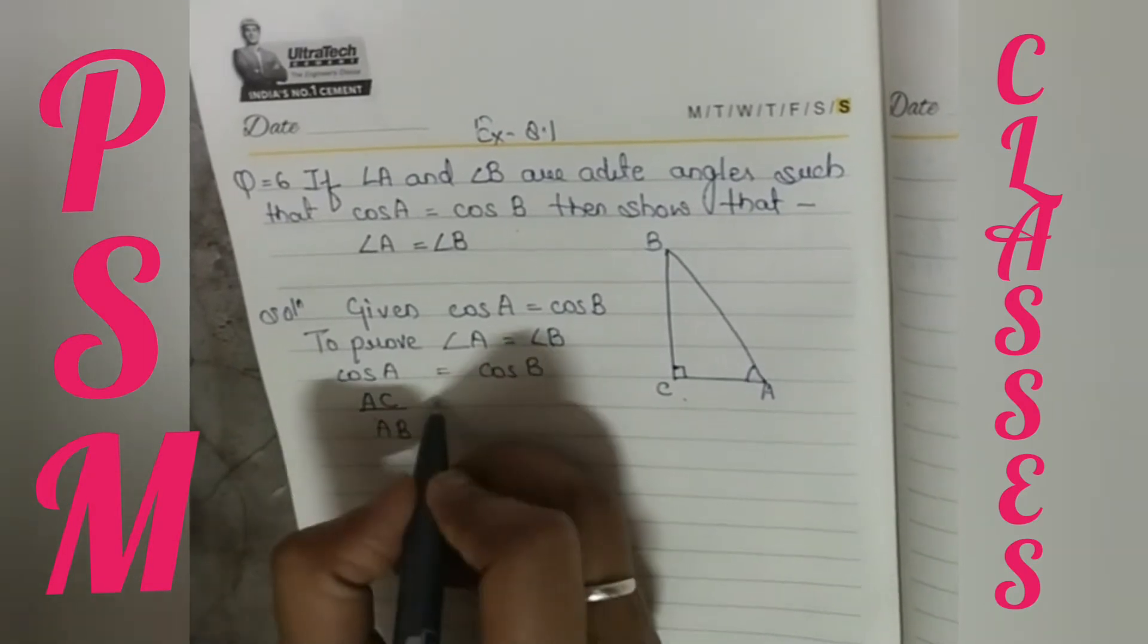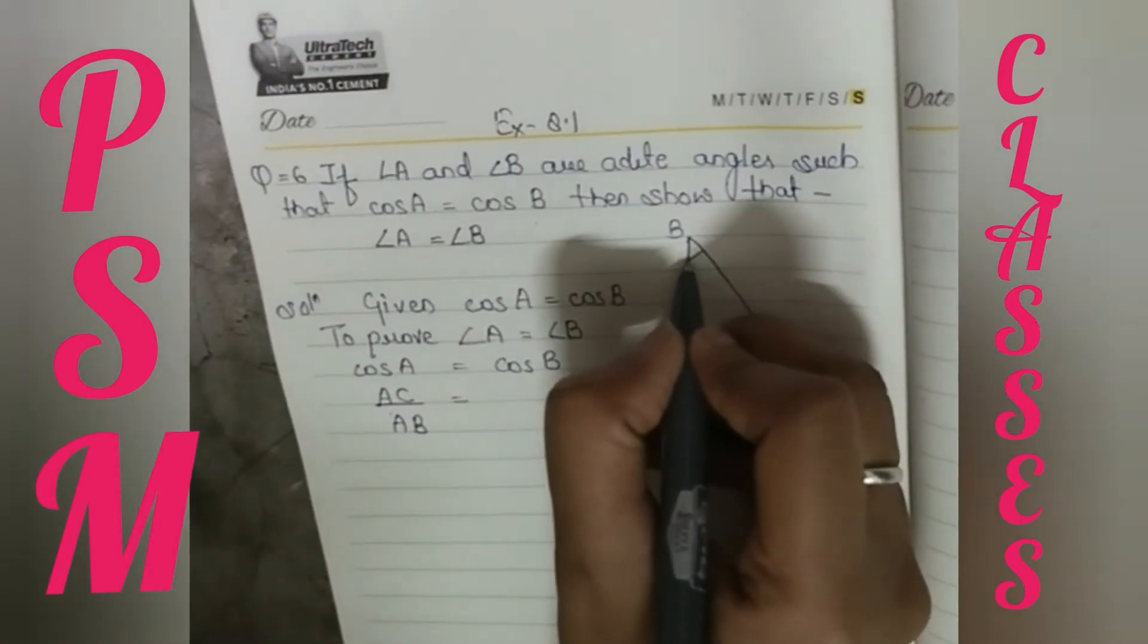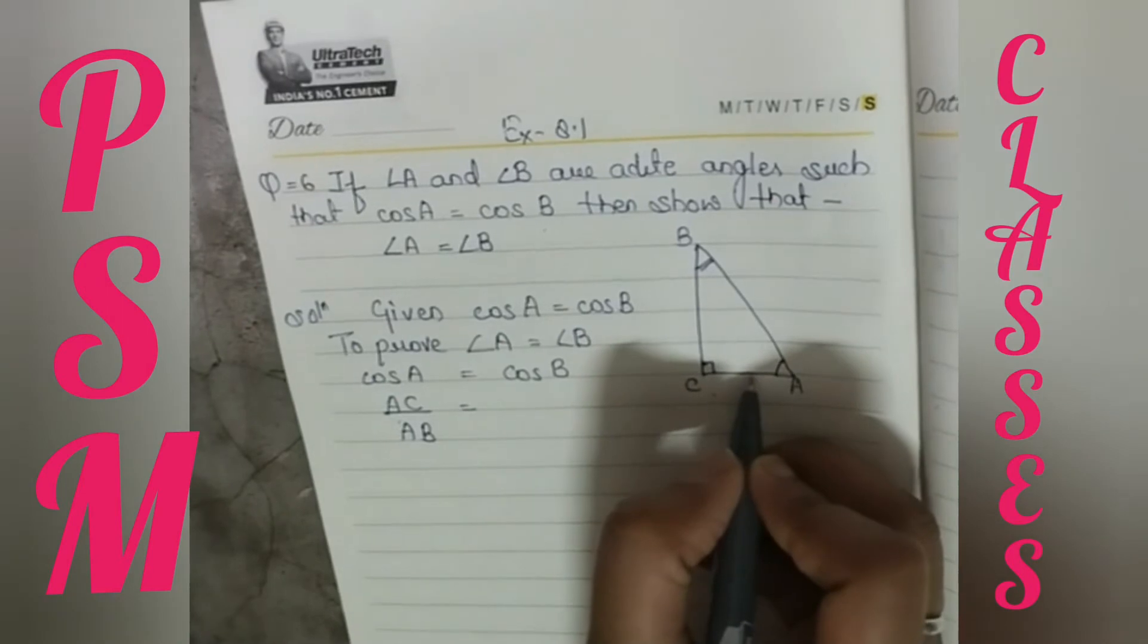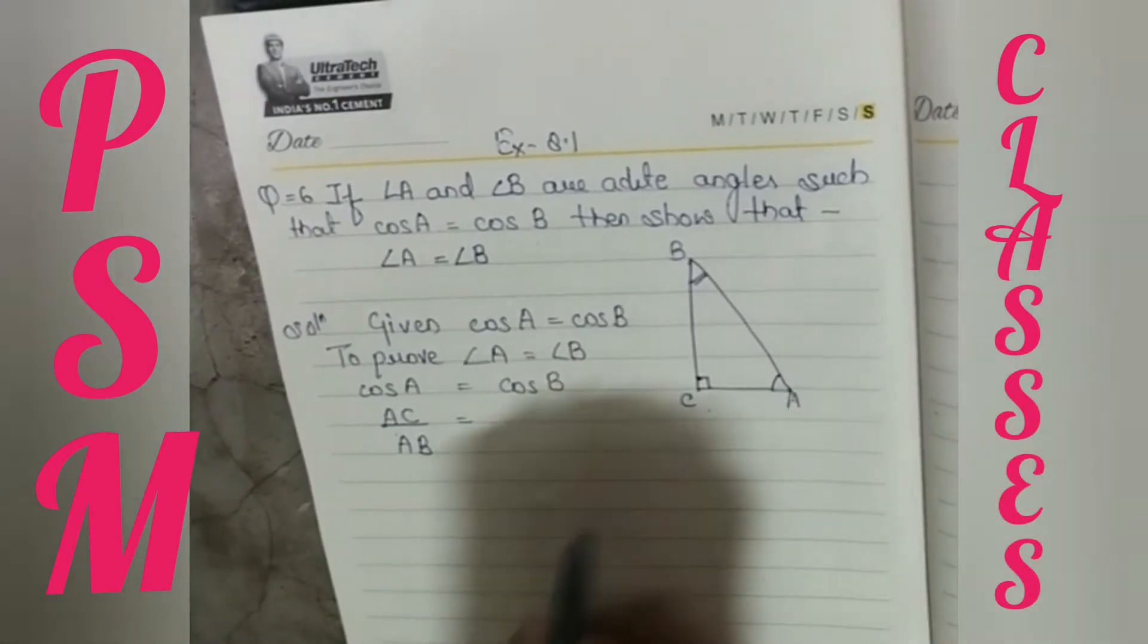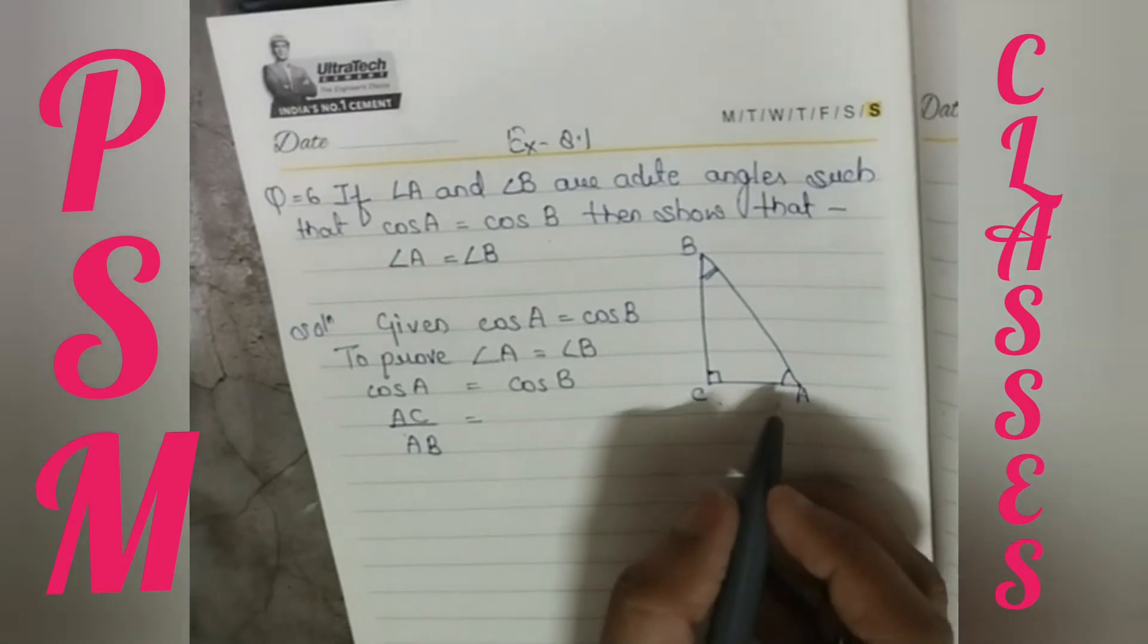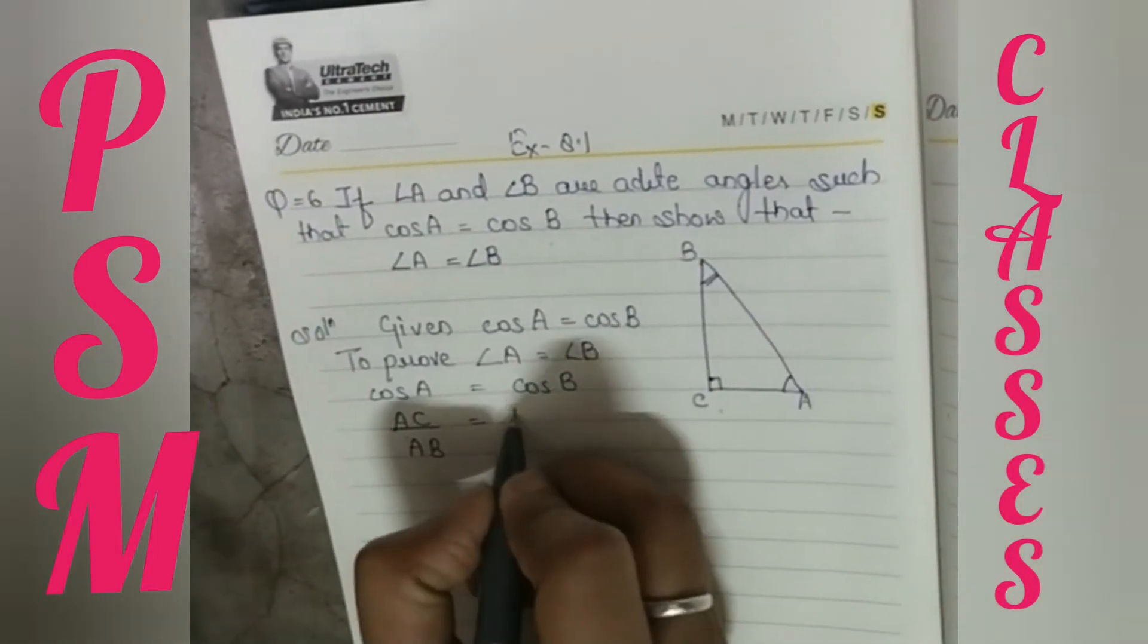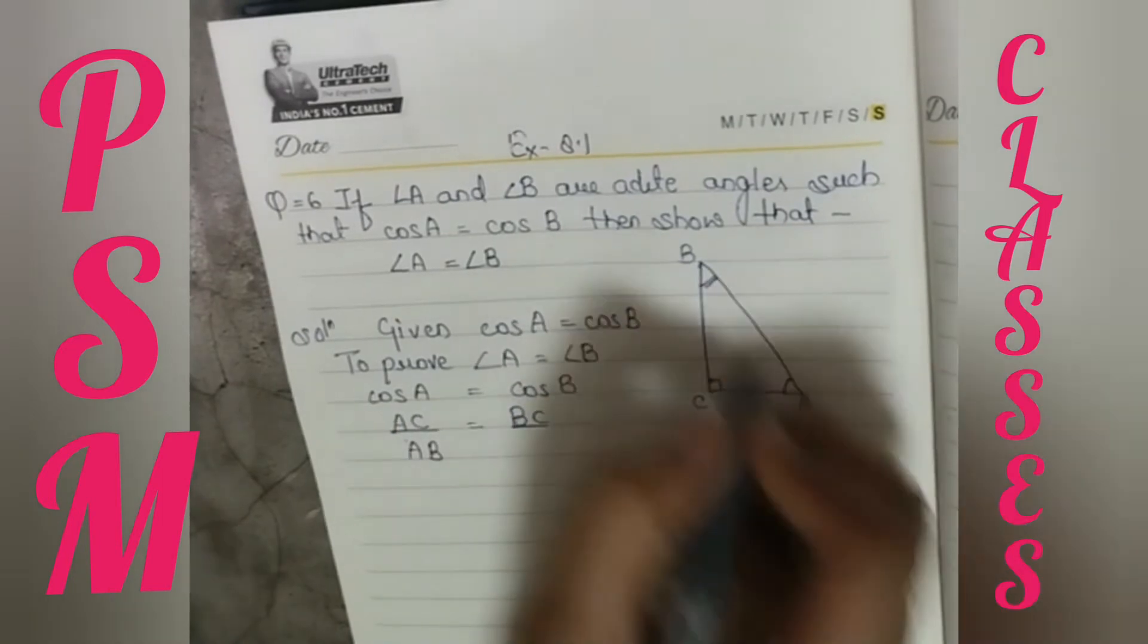Then we have to take a base. Then we have to talk about cos B. In cos B, we will talk about this angle. The opposite angle is perpendicular. Then we have to take a base. So with this, what is BC? And the hypotenuse is AB.